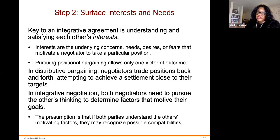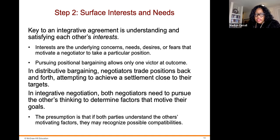The second step is to surface interests and needs. Key to an integrative agreement is understanding and satisfying each other's interests. Interests are the underlying concerns, needs, desires, or fears that motivate negotiators to take a particular position. Pursuing positional bargaining allows only one victor at the outcome. In distributive bargaining, negotiators trade positions back and forth, attempting to achieve a settlement close to their targets. In integrative negotiation, both negotiators need to pursue the other's thinking to determine factors that motivate their goals. The presumption is that both parties understand each other's motivating factors and may recognize possible compatibilities.